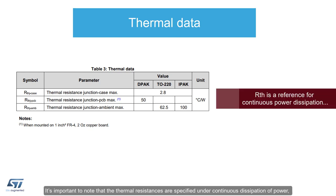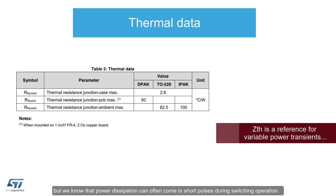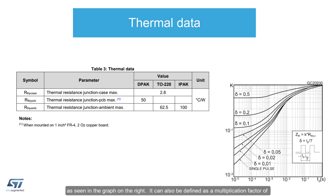It is important to note that the thermal resistances are specified under continuous dissipation of power, but we know that power dissipation can often come in short pulses during switching operation. For this reason, we define a transient thermal impedance, ZTH, as seen in the graph on the right. It can also be defined as a multiplication factor of K that scales the thermal resistances already defined.